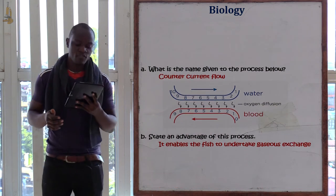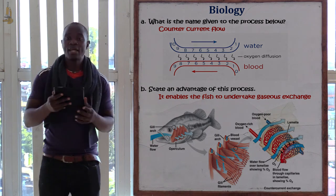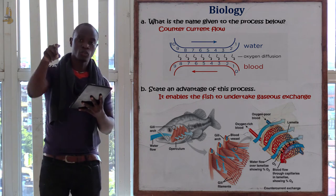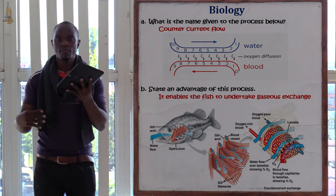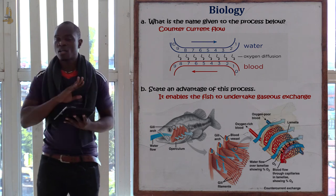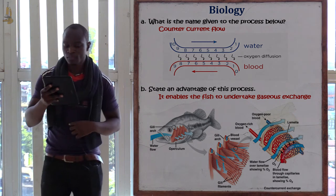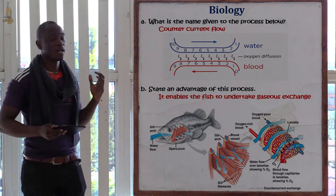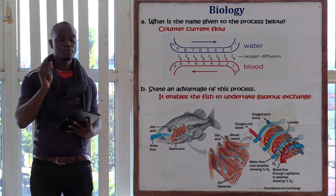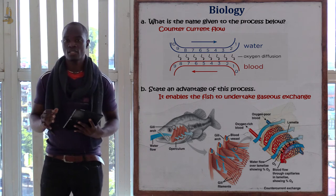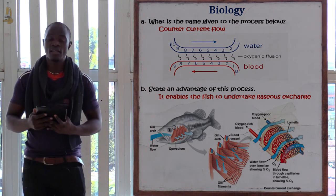The next process shown in the diagram has blood going one direction and water coming from the other side, as if they are exchanging. This process only takes place in one organism — the fish. It is called the counter current flow of water, which takes place in the gill filaments of the fish during gaseous exchange.